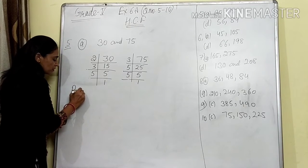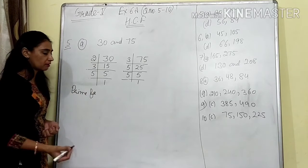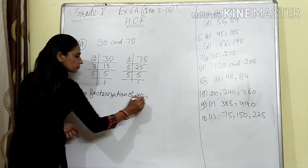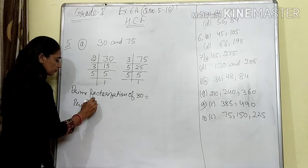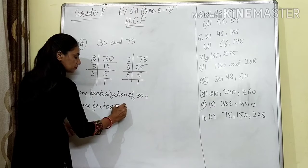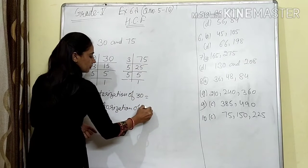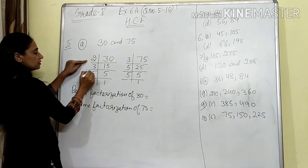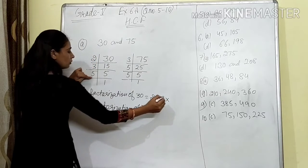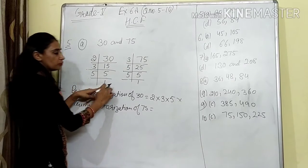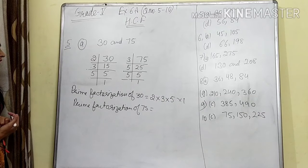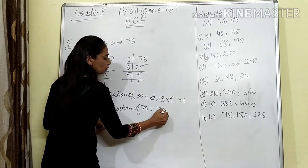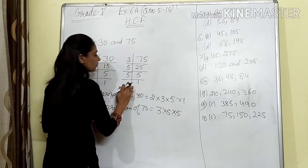Now we write the prime factorization. Prime factorization of 30 is 2 × 3 × 5 × 1. Prime factorization of 75 is 3 × 5 × 5 × 1. You have to write 1 also. These are the prime factors of 30, and that is the prime factorization of 75.